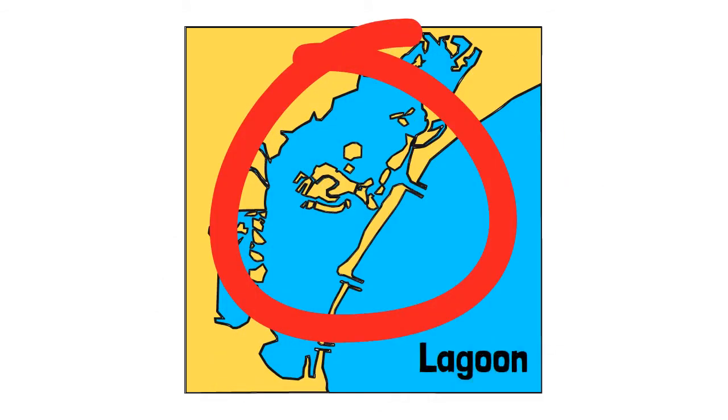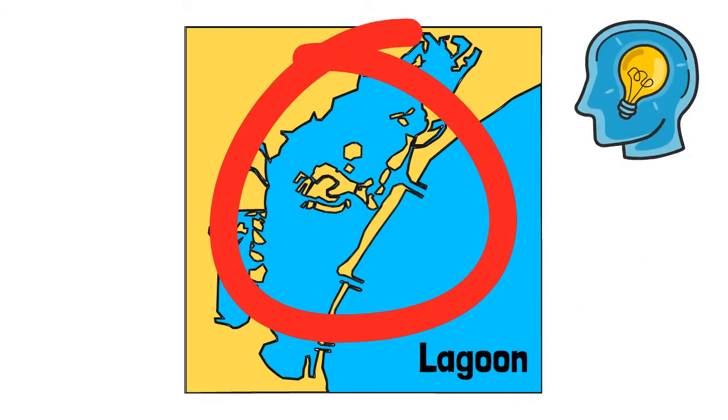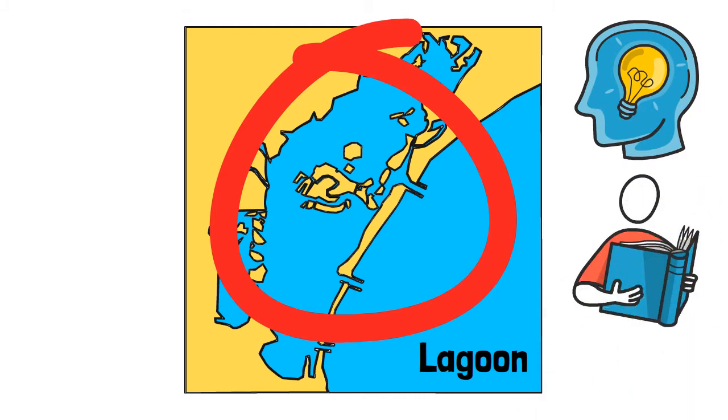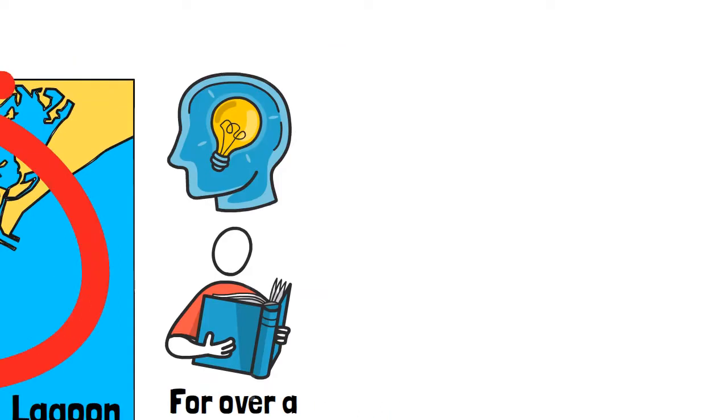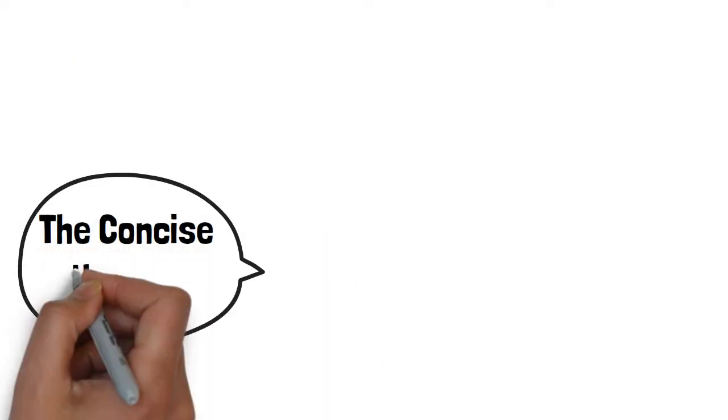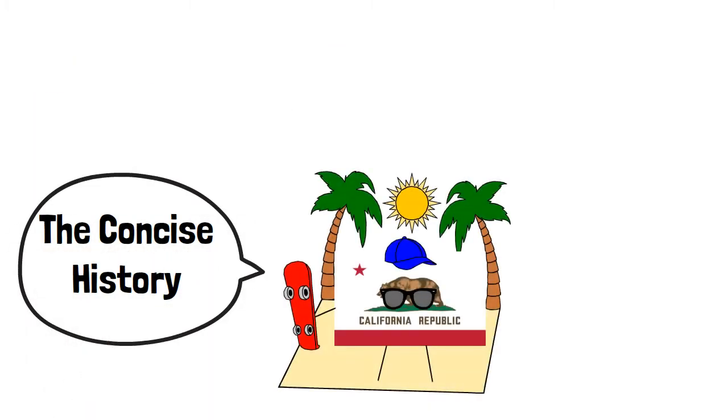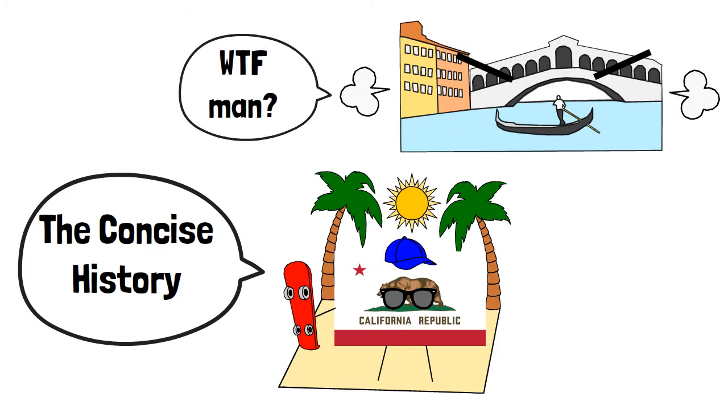Its location around a lagoon has led to ingenious engineering solutions which have stood the test of time for over a millennia and are just crying out to be told. This is the concise history of the city of Venice. Wait, the Italian one, not the one in California.